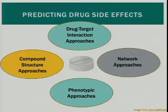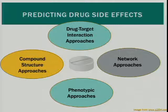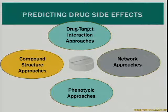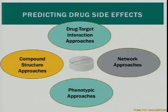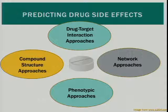For the arc of this talk, I'd like to go through groups of approaches people have tried to tackle the problem of predicting drug side effects or adverse reactions before they actually happen. I've grouped these into a few subsets: approaches that look at just the drug itself — compound structure approaches — then adding interactions between the drug and the target, then network approaches, and lastly an alternative category I've called phenotypic approaches.